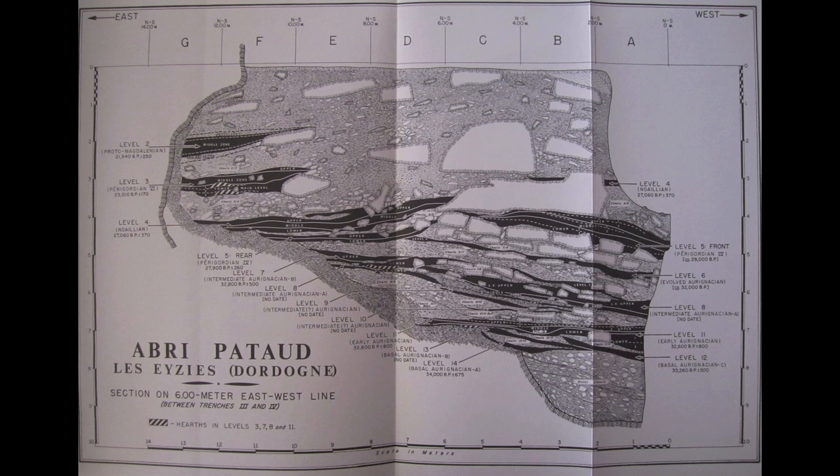We've got the dark charcoal rich occupation layers, each nicely separated by layers of limestone eboulis or frost fractured rock. So this serves as a really good example of the sort of layering we'd almost ideally expect to find.